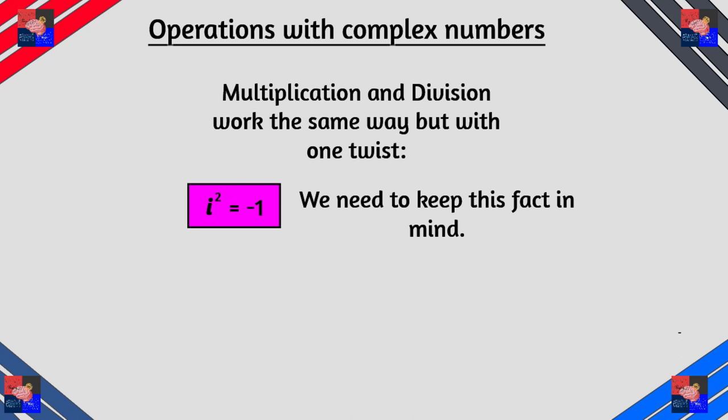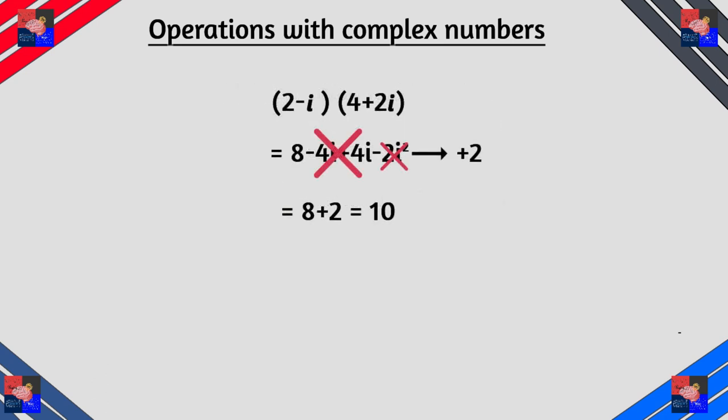Multiplication and division work the same way but we have a twist. We need to keep in mind that i squared is equals to negative one. Why? Let's see. We are very familiar with multiplying binomials. We use the FOIL method to do it.